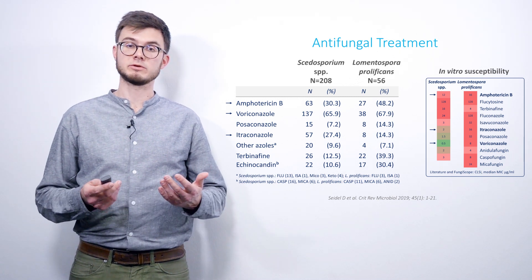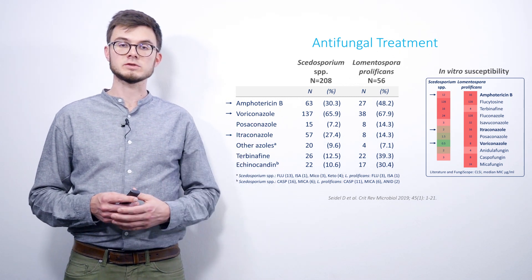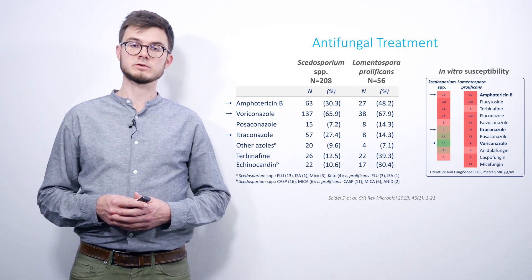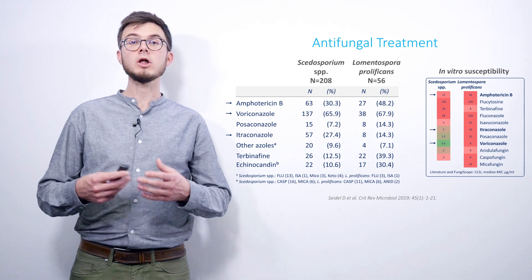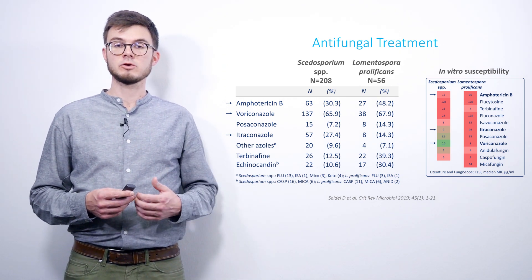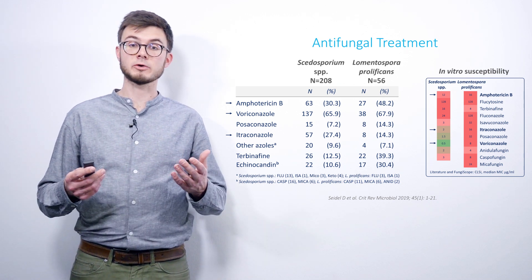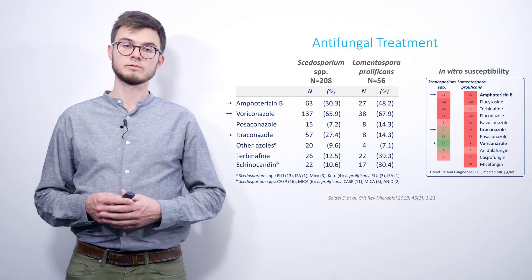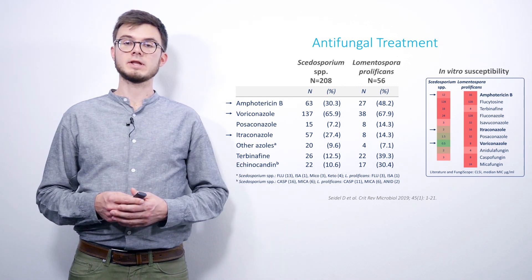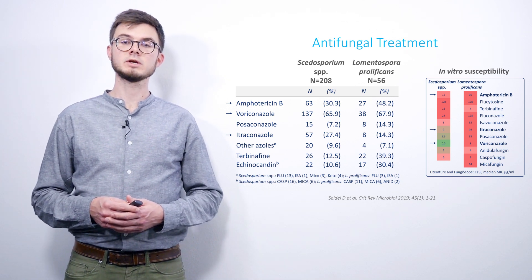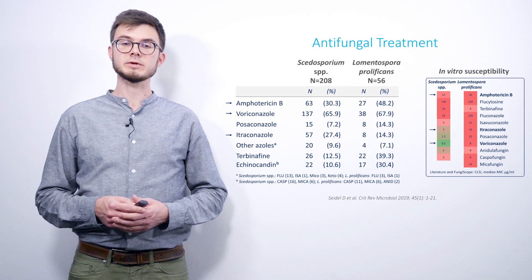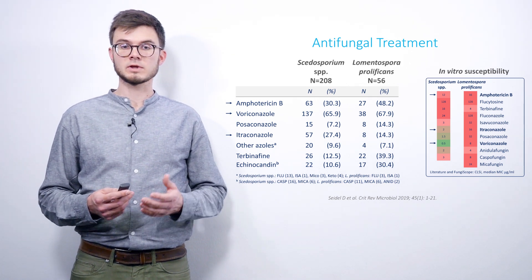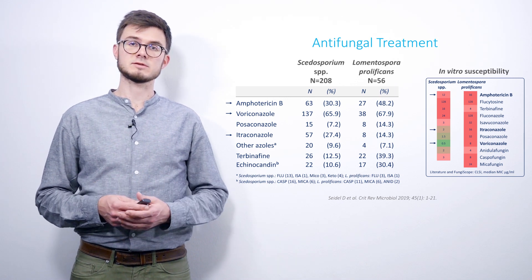So what is the most adequate treatment? On the right side, you see in vitro susceptibility data for Scedosporium species, which shows low minimum inhibitory concentrations for voriconazole only, while almost all other agents have pan-high MICs, raising the suspicion of resistance. For Lomentospora, this looks even worse because it is the case for almost all antifungals tested. The most frequently used antifungal agents in treatment are voriconazole, amphotericin B, and itraconazole. Interestingly, terbinafine was sometimes used as combination treatment with voriconazole, and in this dataset a trend of improved survival was seen, but statistical tests were not significant.